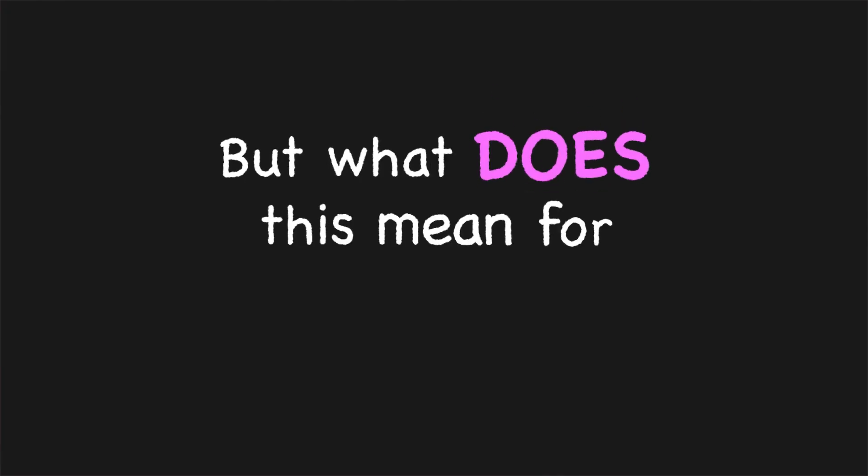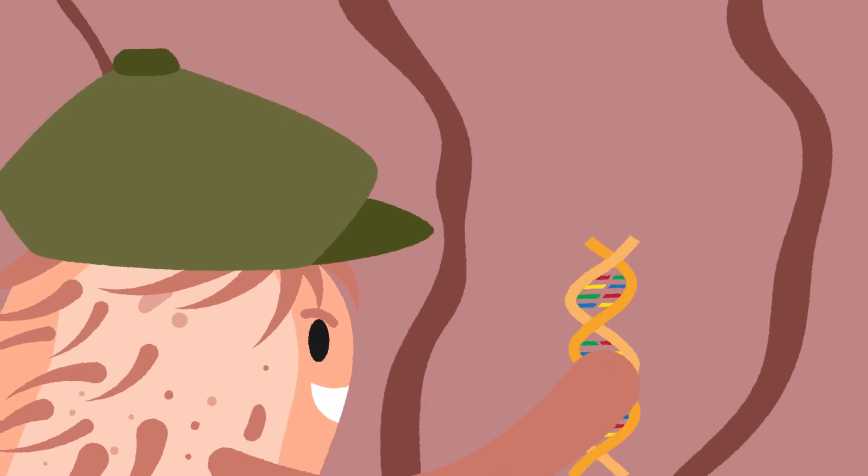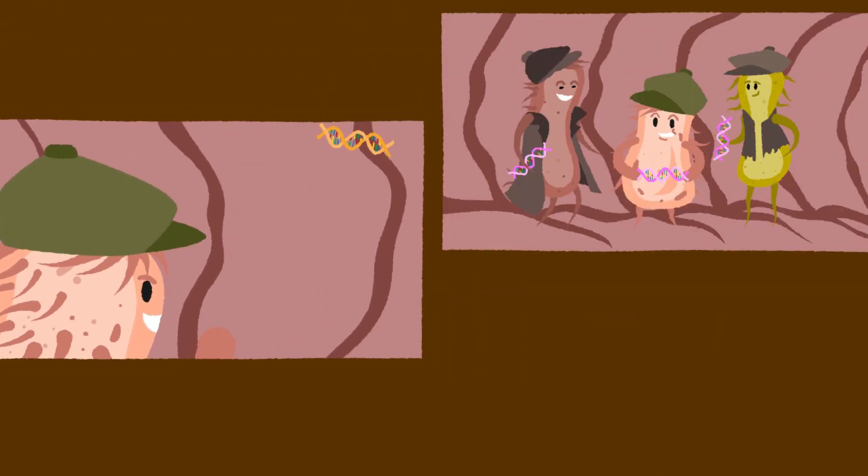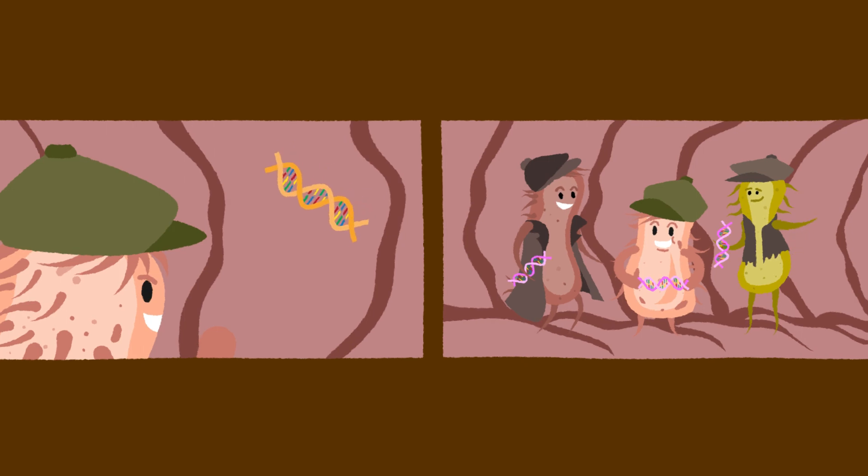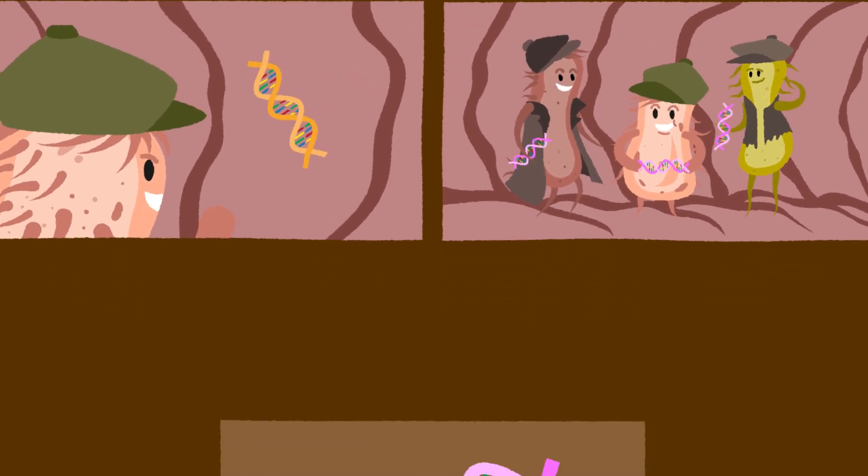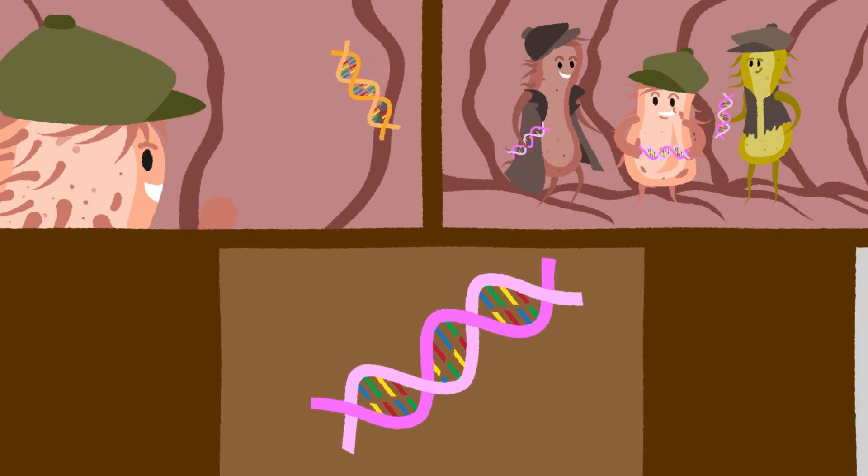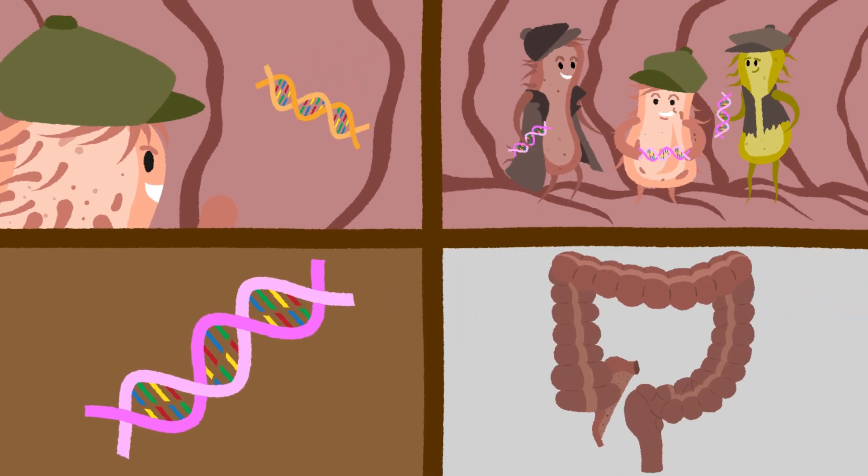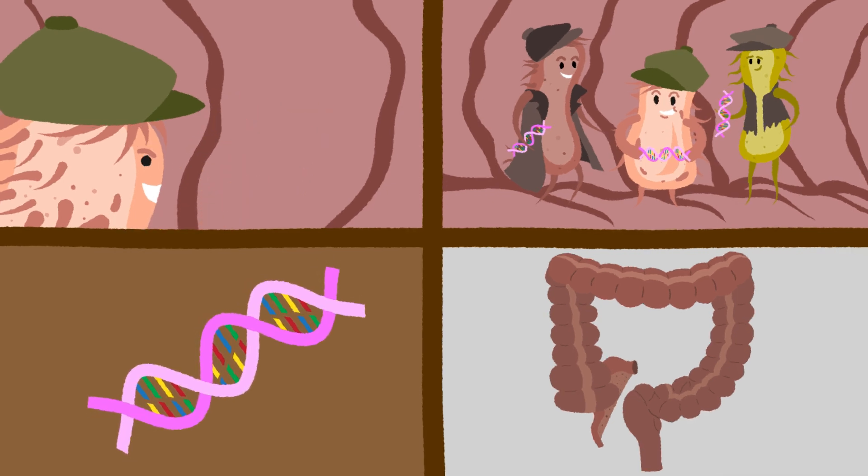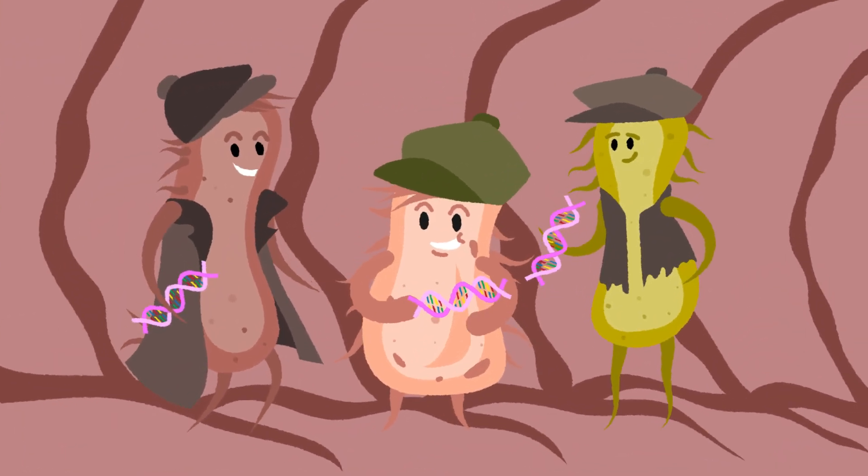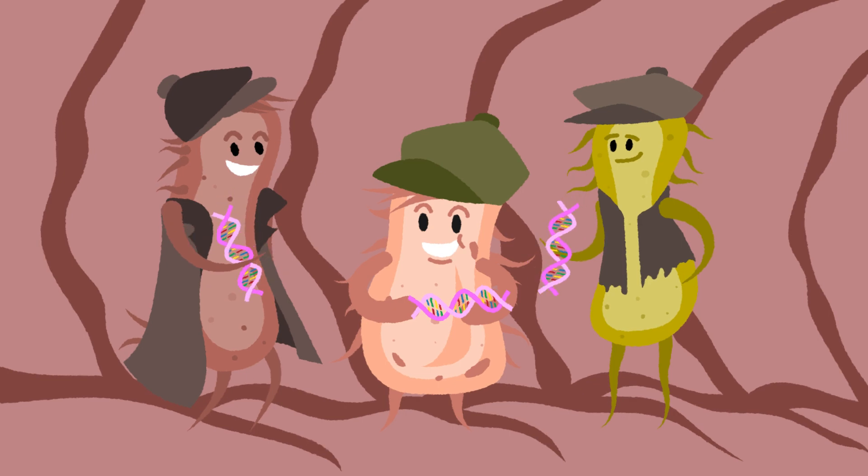But what does this mean for the real world? This technique of life-detecting life shows how engineered bacteria can be designed to detect specific DNA sequences, to diagnose and even treat disease in hard-to-reach places like, but not limited to, the colon. Indeed, even rogue pickpockets deserve a second chance.